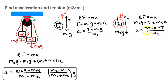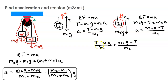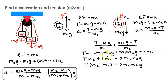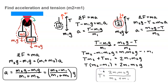Since acceleration wasn't given, we set these two expressions equal to each other to eliminate acceleration. Multiplying both sides by m1 and m2 respectively, we get m1m2g terms on each side. Moving m1m2g to the right gives two of these terms. Factoring out T and solving, we get T equals 2m1m2g divided by (m2 plus m1).